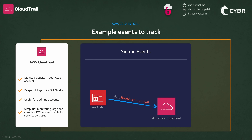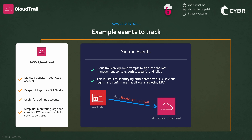Let's take a look at some actual examples of what CloudTrail can log and why it's important. One of the most important events that you need to keep track of is console sign-in events. CloudTrail can log any attempts to sign into the AWS management console, both successful and failed. In this way, you can identify brute force attempts or suspicious logins that took place after hours, and you can confirm that all logins are using multi-factor authentication. Remember that your console is your most critical asset — anyone with access to your console can potentially do a lot of damage.